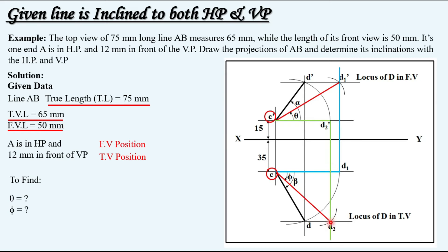Once we have this we can locate the locus. Once the locus is with us you just have to rotate this front view up to this point and obtain the final front view. Here you have to rotate it on the locus and obtain final top view.